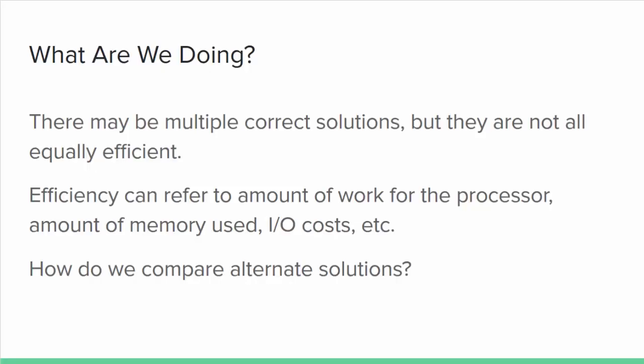Your primary responsibility as a programmer is to write correct code. If your code doesn't do what it's supposed to do, nothing else really matters. However, not every correct solution is created equal. Some solutions are more efficient than others, and we do need some way to determine how efficient a solution is and to compare the efficiency of alternative solutions.